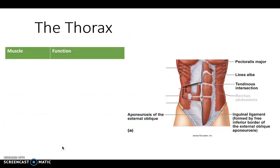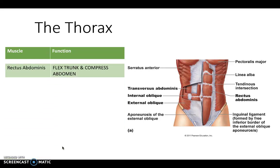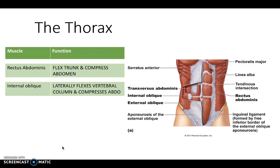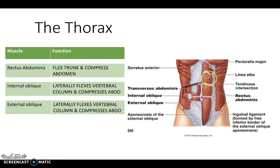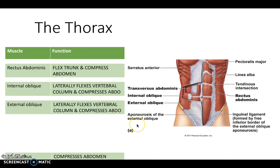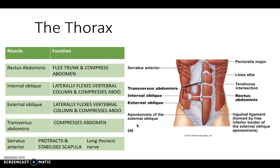Next we have the thorax, where several muscles are mostly involved in forced respiration. We have rectus abdominis, the internal oblique and the external oblique - notice how these run in slightly different diagonal lines. The internal oblique runs diagonally anteriorly and the external oblique runs diagonally internally. Then we have transversus abdominis and serratus anterior. Note that serratus anterior is innervated by the long thoracic nerve - if you learn the brachial plexus you will know this.